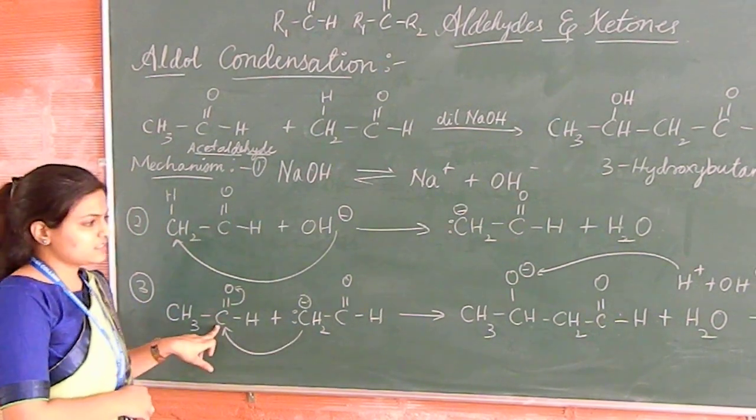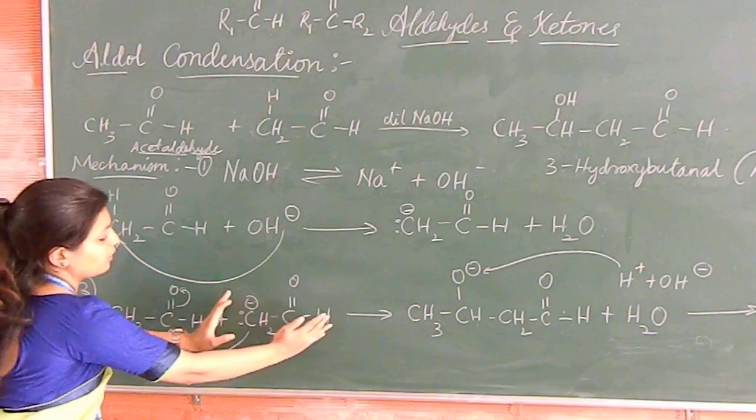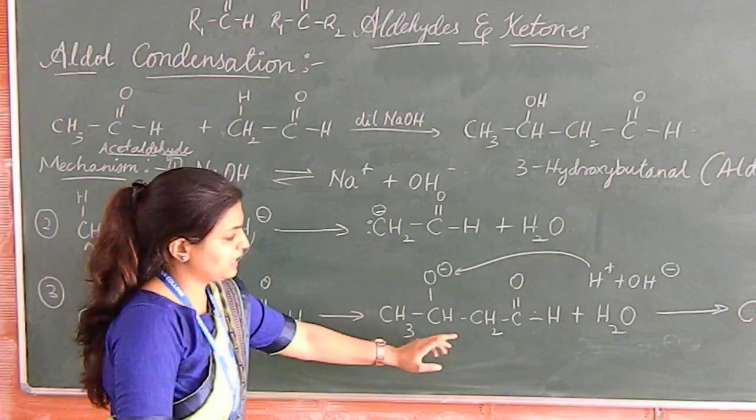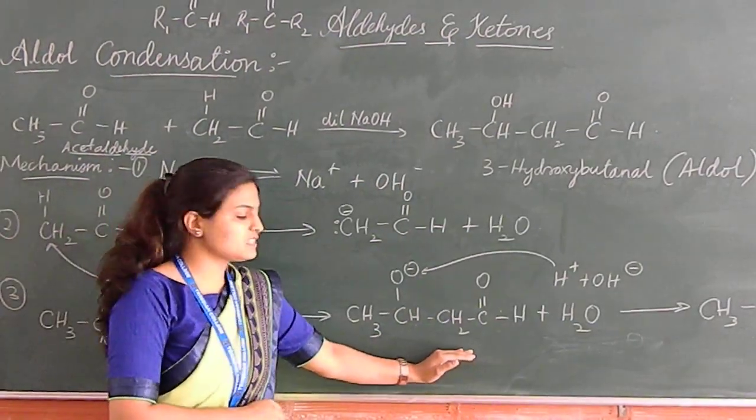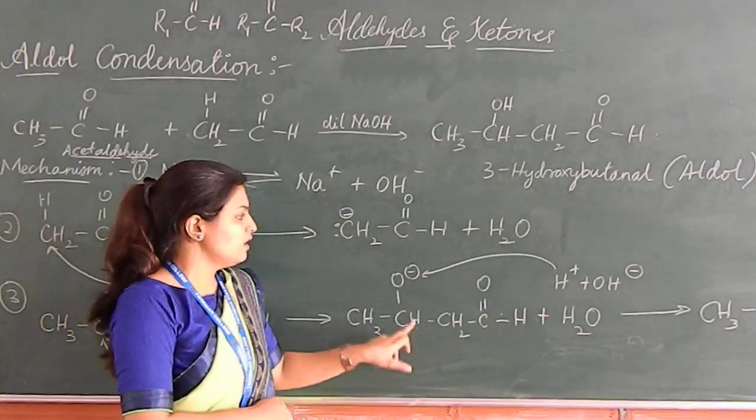Now when this CH2 goes and attacks this carbon atom, this will give a place to this. This complete moiety attached to this carbon atom will give you this intermediate. This is an anion because it is having minus charge, that's why it is called as anion intermediate.